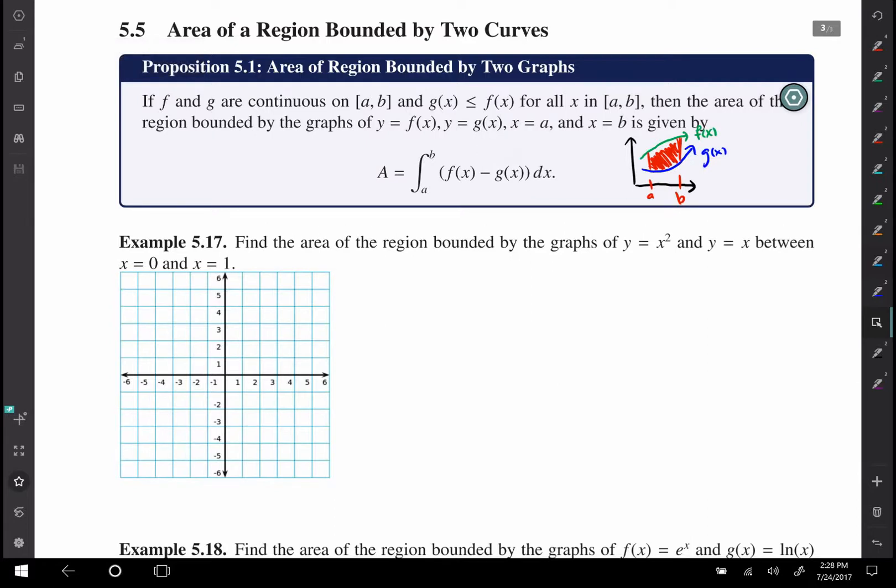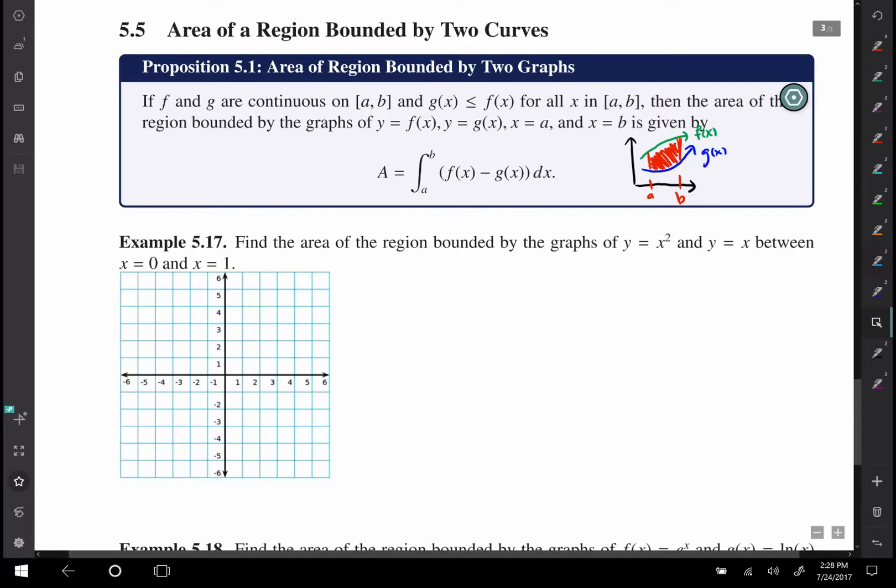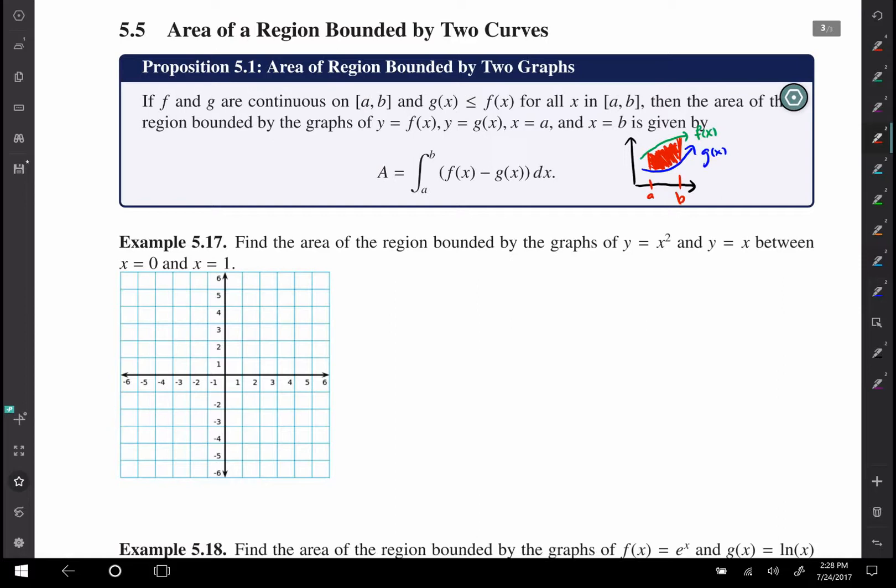Okay, now I'd like to talk about the area bounded by two curves. Proposition 5.1 says that if you have two curves f and g, and if f is always bigger than g on an interval from a to b, then the area of the region bounded by those two curves from a to b, this red shaded region, is going to be given by the definite integral from a to b of f(x) minus g(x). This is very important - f(x) has to be bigger than g(x) on that interval.